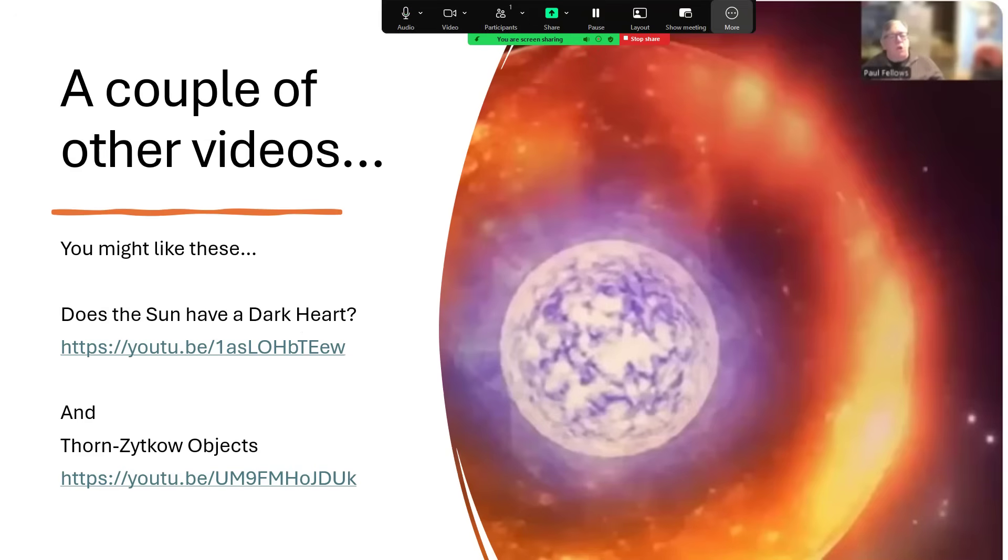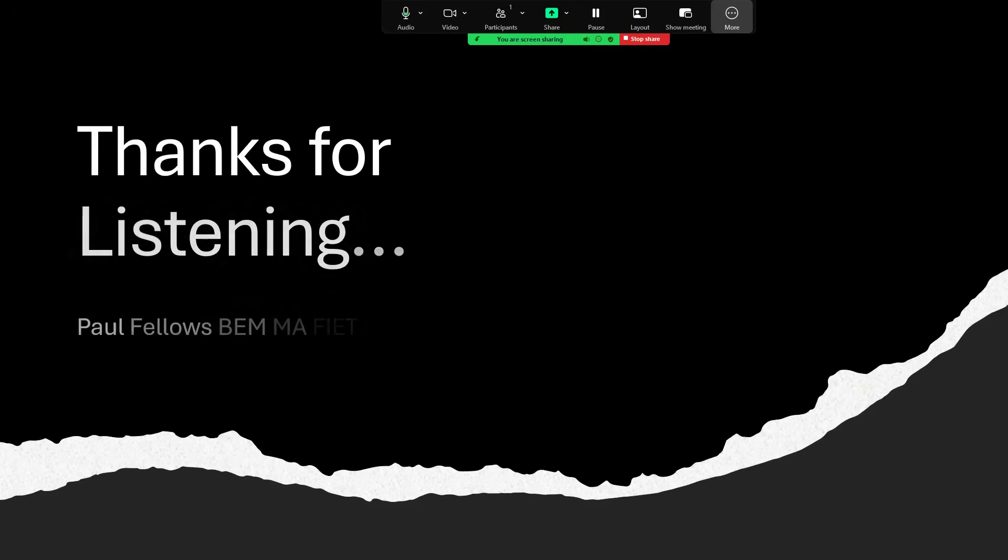Now, if you are interested in that sort of thing, I've got a couple of videos that you might really enjoy, one called Does the Sun Have a Dark Heart, and the other Thorne-Zytkow objects. Please go and have a look at those because they talk to the same sort of idea of quasi and exotic hybrid stars, and with that, thanks very much for listening, and I'll see you in the next one.